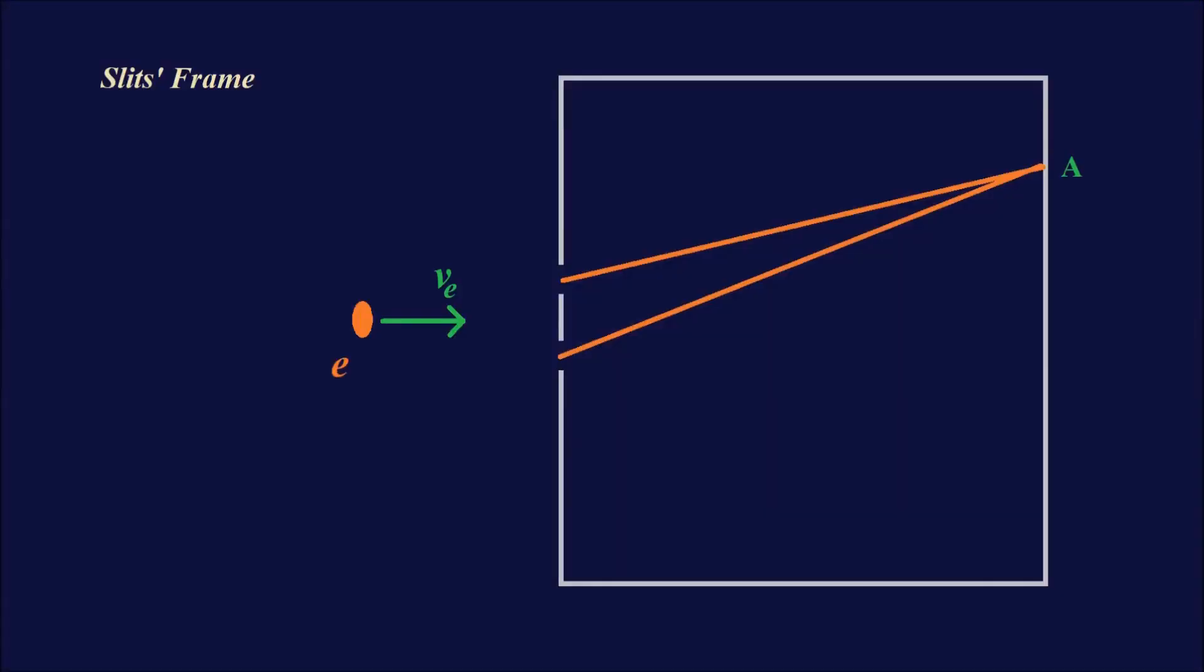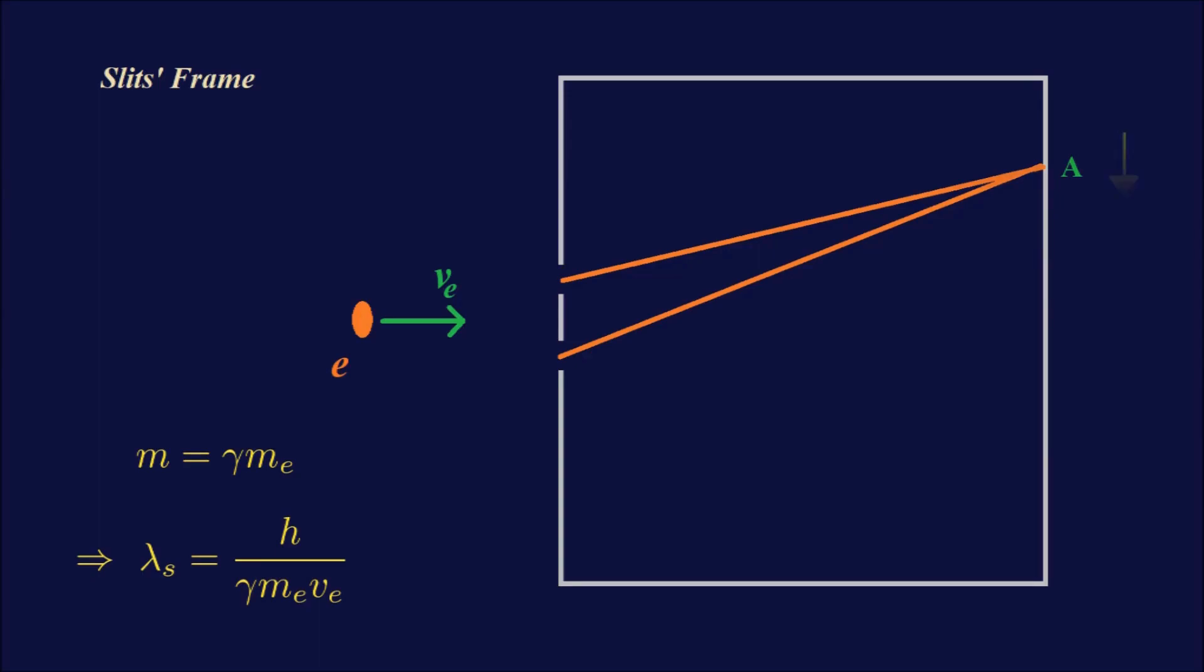Now we will show that the interference pattern remains the same even for high-speed particles. In the slits frame of reference, the particle is travelling at a high speed, so its transit time from the slits to the screen is very short. The wavelength of such a particle is already small, but the relativistic mass of the particle will increase by a factor of gamma, and because of that, the wavelength will shorten even more by a factor of gamma as well. This reduces the width of the entire interference pattern by an amount proportional to gamma.